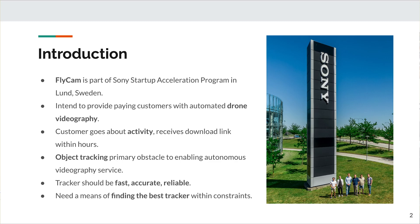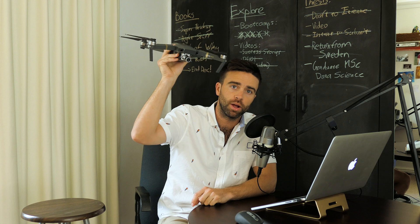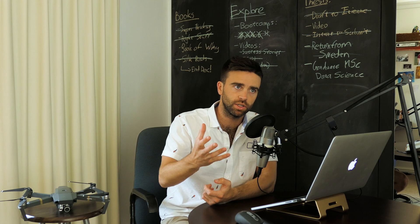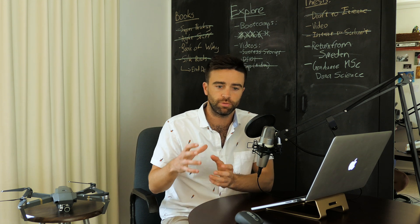Flycam's intention is to provide paying customers with an automated drone videography service. The customer shows up at the ski resort or the mountain bike park, they order their drone, they go about their activity as usual and the drone follows them. We identified that object tracking is the primary obstacle to enabling this autonomous videography service. The tracker we ultimately need to settle on needs to be very fast, performing in real time; very accurate, so it can't lose track of that athlete; and reliable, such that if it does lose track, it can find it again by some means.